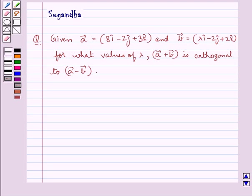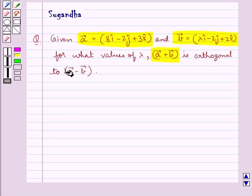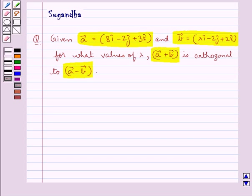Hello and welcome to the session. In this session we discuss the following question: given vector A equal to 8i cap minus 2j cap plus 3k cap, and vector B equal to lambda i cap minus 2j cap plus 2k cap, for what values of lambda is vector A plus vector B orthogonal to vector A minus vector B?